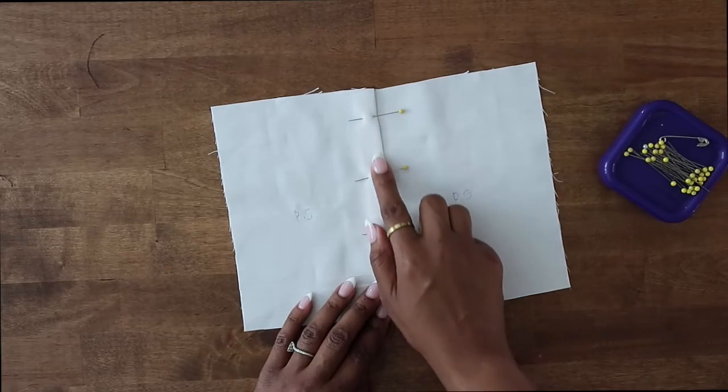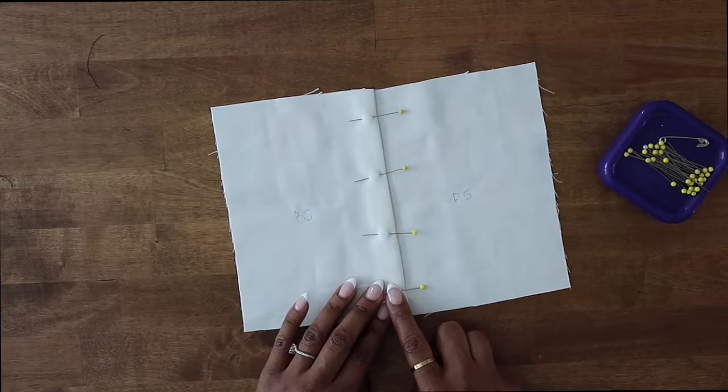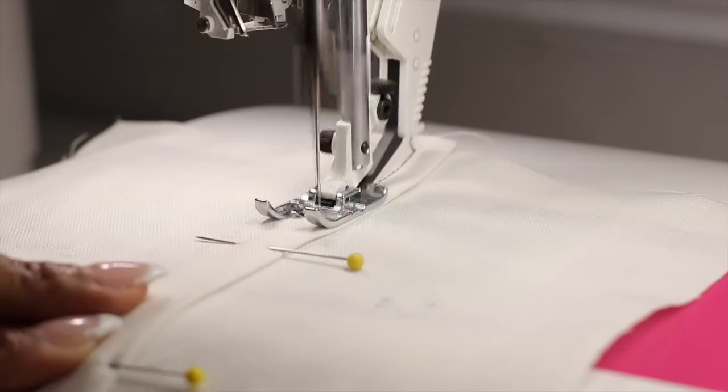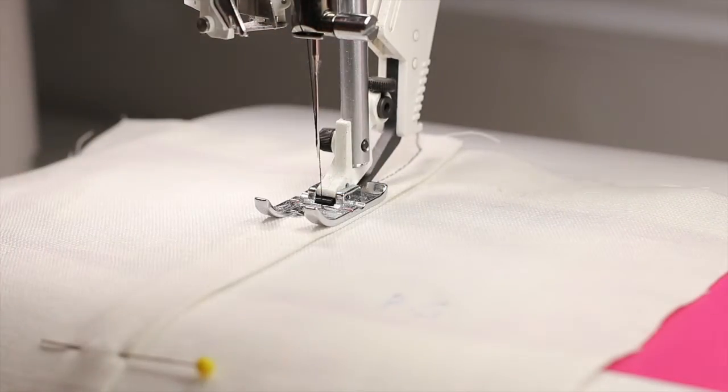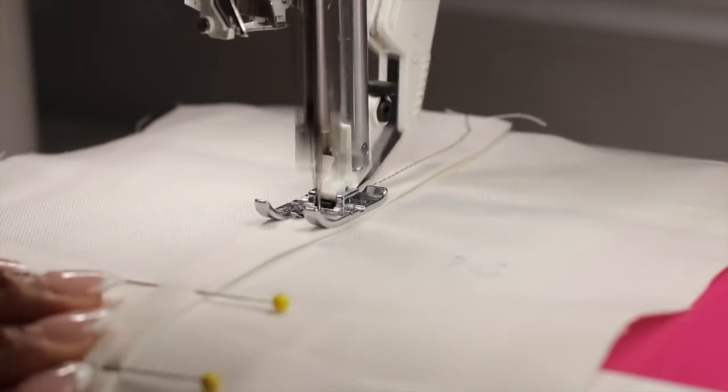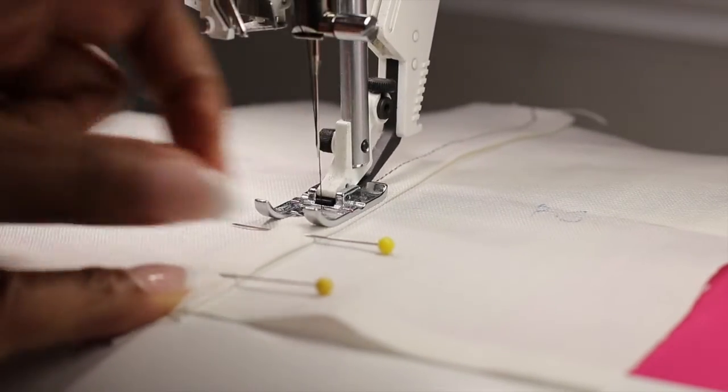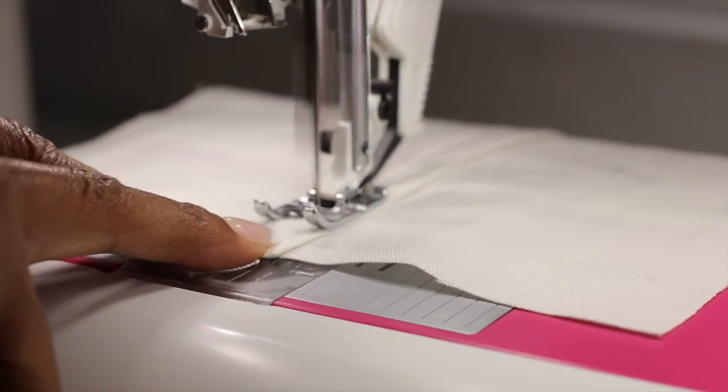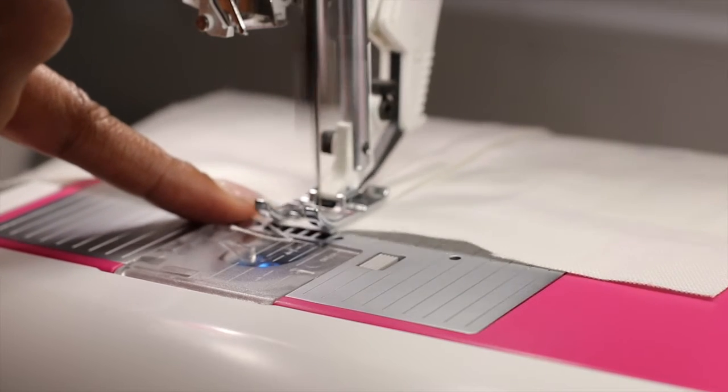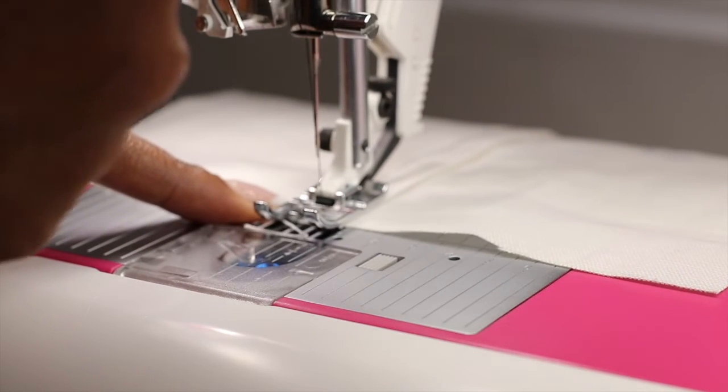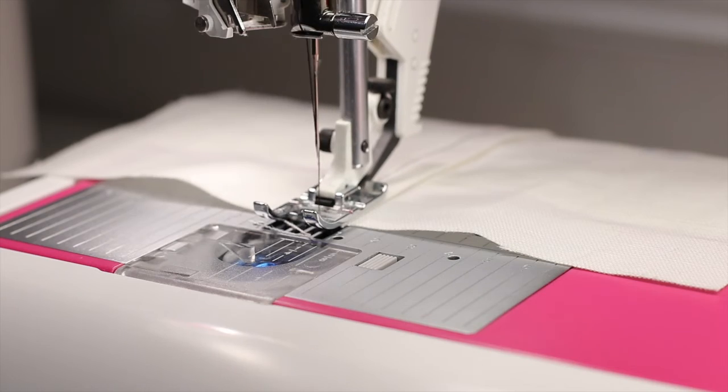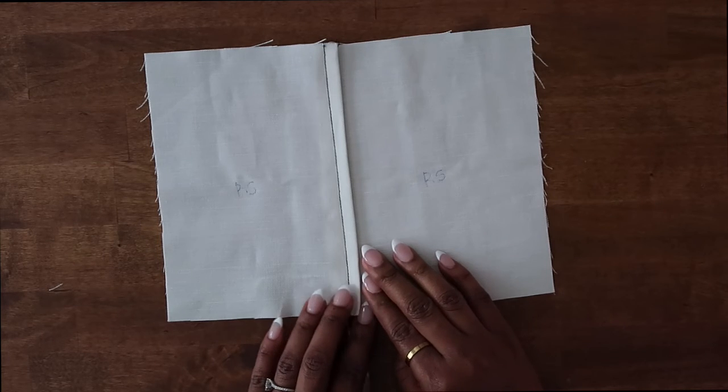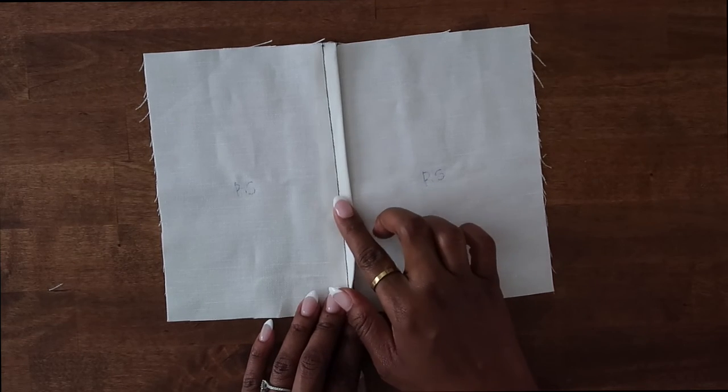And now we can stitch this down using a straight stitch at a quarter of an inch on the edge. And so here is the final lapped seam. It adds a really fun element to your garments.